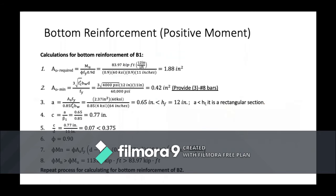For positive bending moment we calculate the bottom reinforcement, providing tension at the bottom. The following calculations are for beam B1. The required steel area As is calculated as the maximum moment of 83.97 kip-feet divided by the phi factor times yield strength times 0.9 times the depth, giving 1.88 inches squared. The minimum steel area is three times the square root of concrete strength times beam width times depth divided by yield strength, which comes out to 0.42 inches squared. We decided to provide three number eight rebars. The compression block depth A equals steel area times yield strength divided by 0.85 times concrete strength times beam width, which comes out to 0.65 inches.